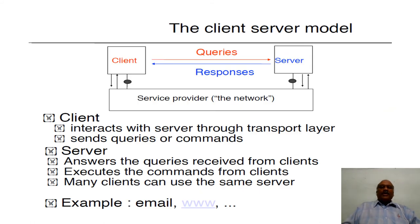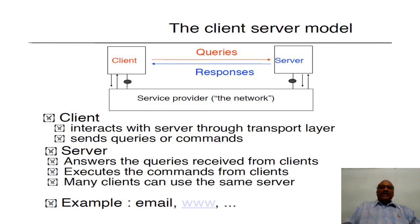The client-server model follows the TCP/IP suite, where the client tries to get information from a particular server by querying the servers. The query messages are transmitted to the server, and the server gives the corresponding responses in the form of messages to the requesting client. These things happen with the help of the network. At the client side, all four layers of the TCP/IP model get executed, and similarly at the server side, the requested messages from the client are processed by following those four-layer functionalities. A server answers queries from clients, executes their commands, and many clients can use the same server.